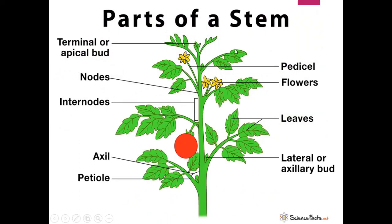Here you can see the picture of the stem. The first part is the node — it is the place where new branches will arise. This part is called the node. Internode means it is the portion of the stem between two nodes, and it is called the internode.